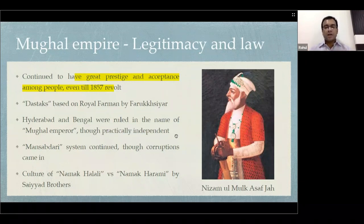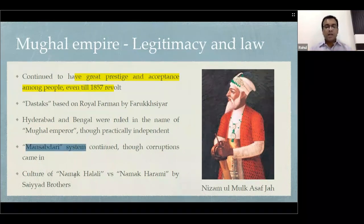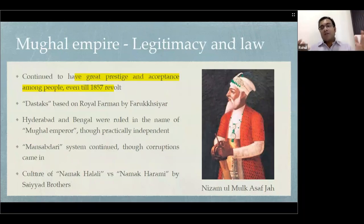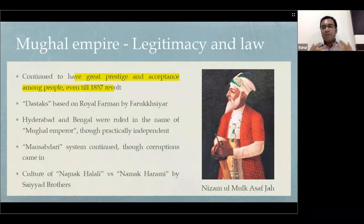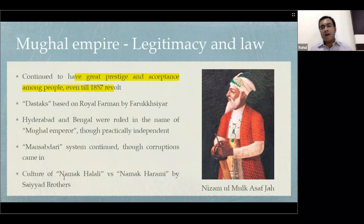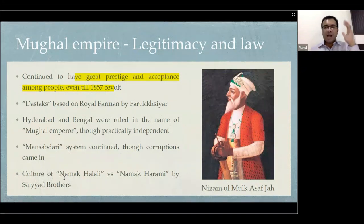The Mughals had established systems like the mansabdari system that continued. In India, namak halali — loyalty to the salt — is very important. The Mughals were so legitimate that nobody resisted them, because loyalty to the Mughals was a matter of loyalty to the salt. This factor was important — it is why the Mughals did not crumble immediately even though their rulers were weak and the economy was failing.